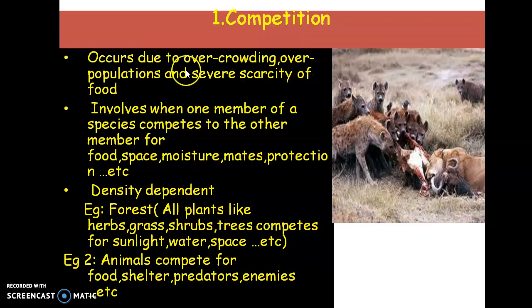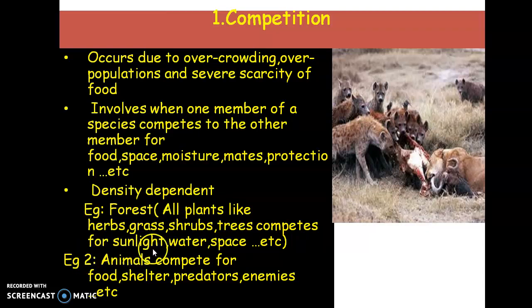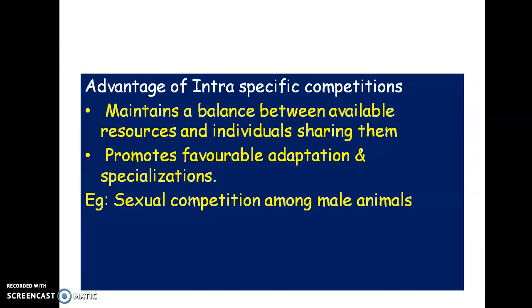Competition mainly depends upon population — whenever there is overpopulation, competition occurs — so it is a density-dependent phenomenon. In a forest, different kinds of plants like herbs, shrubs, and trees all compete for basic needs such as sunlight, water, and space. This is intraspecific competition among plants. In the case of animals, they are competing for food, shelter, protection from predators, and mates. That is the general idea about competition.